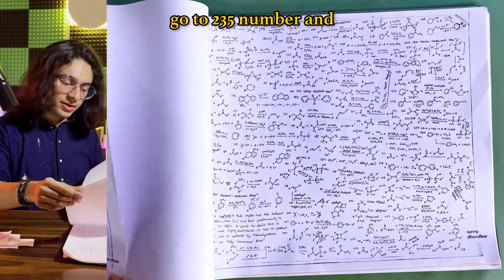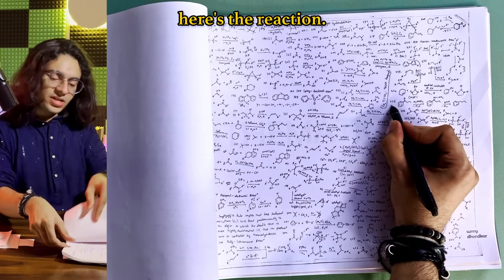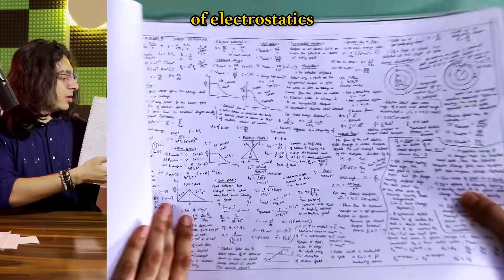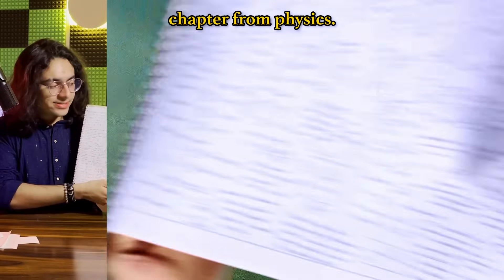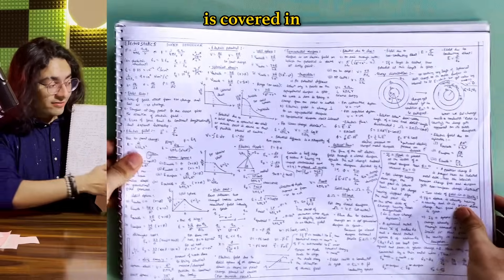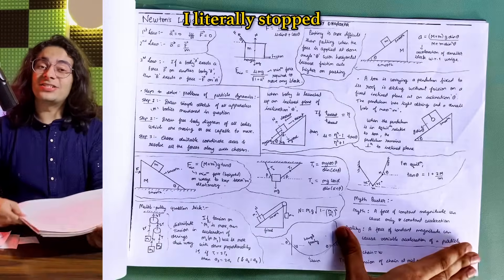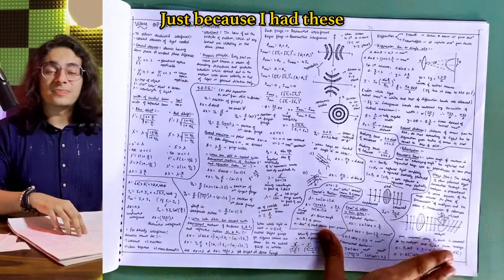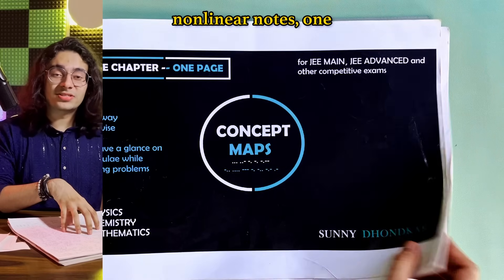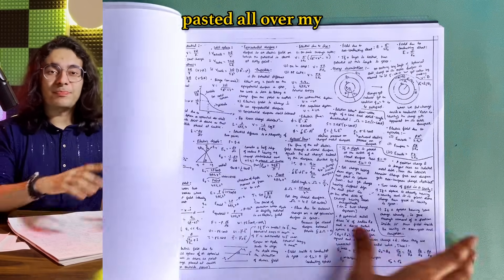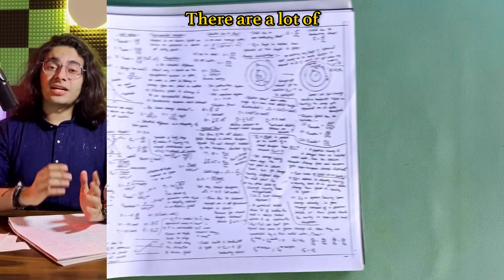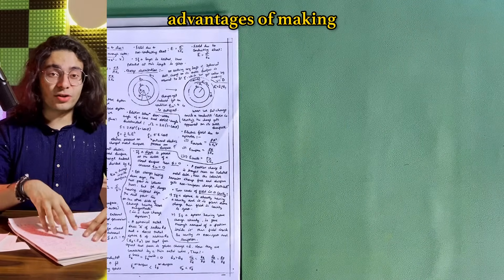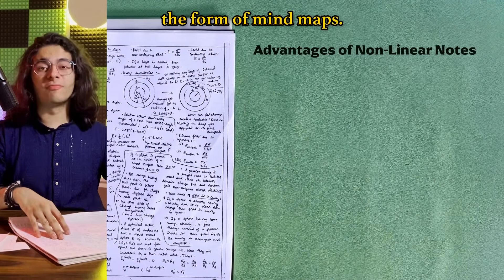For example you are solving previous year papers and you find a question that requires you to remember Wolff-Kishner reaction. So just like dictionary you go to W and find Wolff-Kishner reaction at 235 number and on the next two pages you go to 235 number and here's the reaction. Here's an example of electrostatic chapter from physics. The entire chapter is covered in the single page. I literally stopped going through my linear notes when I was in my revision phase just because I had these non-linear notes one page for one chapter pasted all over my room on the walls.